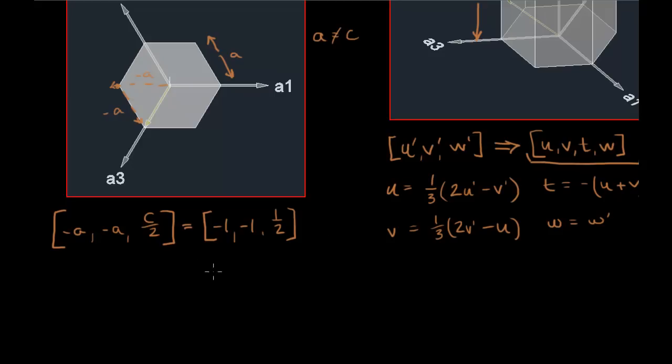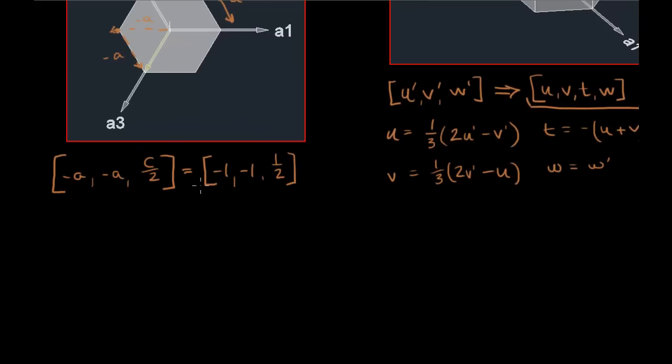And now this is an important step. Before we move on to plugging this into these equations, we need to reduce this to its simplest integer form, okay? So this ends up being negative 2, because I have to multiply everything by 2, negative 2, and then this will become 1, okay?